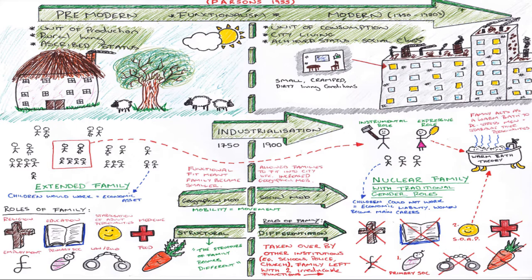We'll start going through this at the very top with this big arrow. Parsons looked at the family and how it shifted between the pre-modern and the modern. The pre-modern was anything before 1750, and the modern was the 1750s to the 1980s.